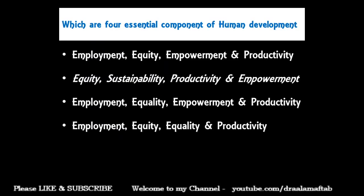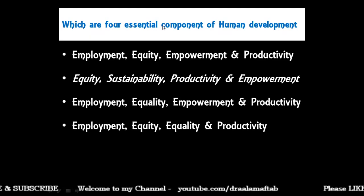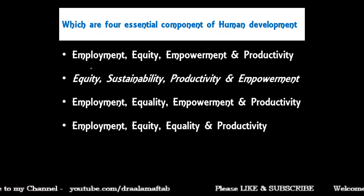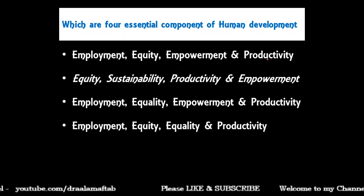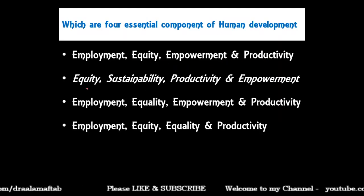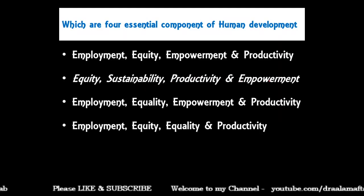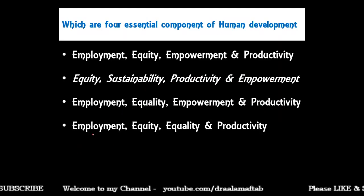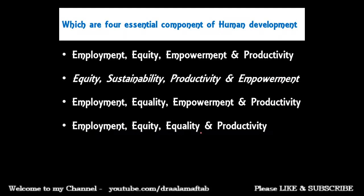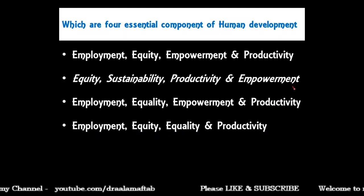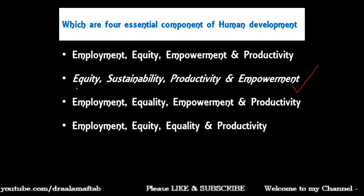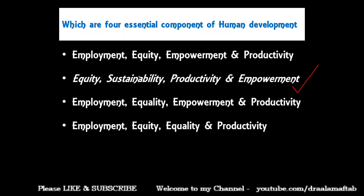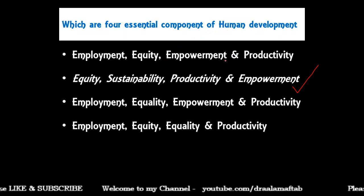Which are the four essential components of human development: employment, equity, empowerment and productivity; equity, sustainability, productivity and empowerment; employment, equality, empowerment, productivity; or employment, equity, equality and productivity? The correct answer is equity, sustainability, productivity, and empowerment — these are the four components of human development according to Mahbubul Haq.